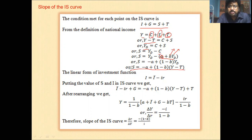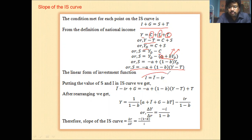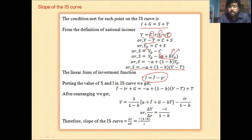In the savings equation, 'a' is autonomous consumption, 'b' is the marginal propensity to consume, Y is income, and T is tax. The investment function is linear: I equals I-bar minus i·r, where I-bar is autonomous investment, 'i' is the sensitivity of investment to the rate of interest, and r is the rate of interest.